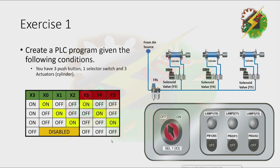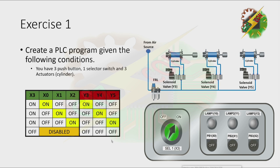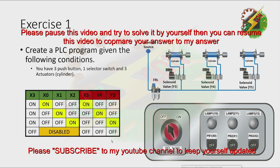Then let's try it again. Let's turn on the selector switch. Right now let's press PB2 first. Now let's press PB1. Now let's press PB3. Okay, that's it.